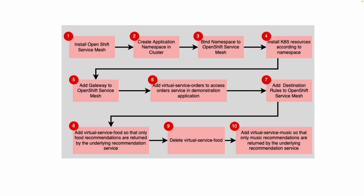Then we're going to add a gateway to the OpenShift service mesh, which allows external requests to get into the service mesh. Then we'll add a virtual service orders to the service mesh, making orders subject to the service mesh. That means the service mesh will be in charge of the order service, and then we're going to apply a destination rule.